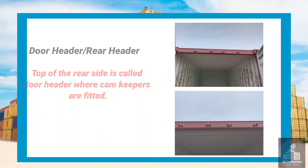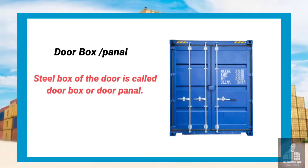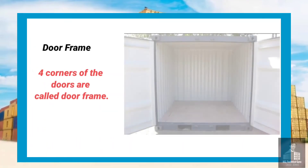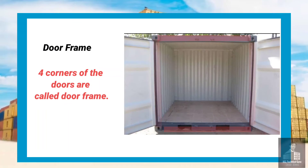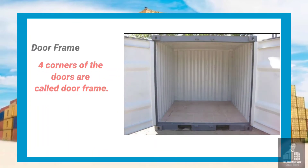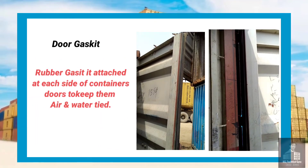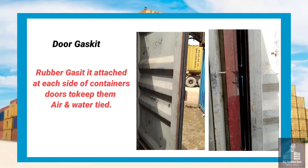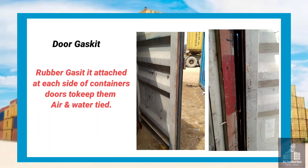Door box or panel: the steel box of the door is called the door box or door panel. Door frame: the four corners of the doors are called the door frame. Gasket: a rubber gasket is attached at each side of the container doors to keep them airtight and watertight.